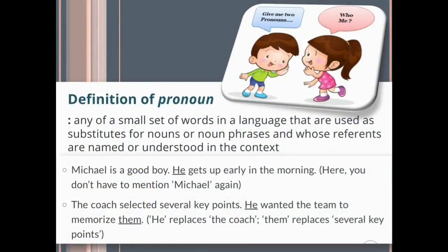Definition of pronoun: any of a small set of words in a language that are used as substitutes for a noun or noun phrase and whose referents are named or understood in the context. So, if we are using any words at the place of a noun or noun phrase in a sentence, those words are called pronouns. See the example: Michael is a good boy. He gets up early in the morning.